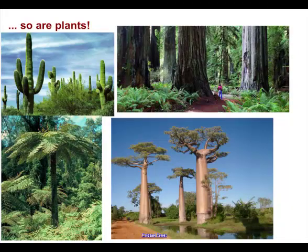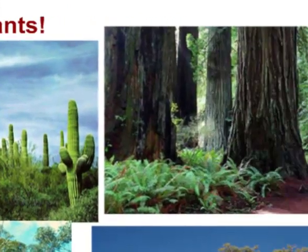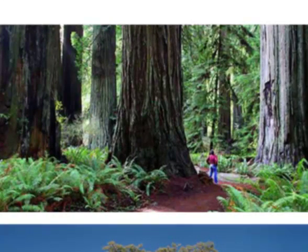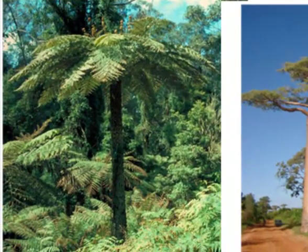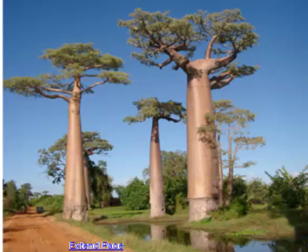Plants are no exception. In a desert we have cacti, specially adapted to store water for long periods of drought. We can also have massive rain forests — here a person walks through the giant redwoods on the coast of California, where lush rainfall promotes lots of growth including ferns. In Australia and New Zealand there are tree ferns — massive great big ferns. In Africa, the baobab tree has a huge trunk to store lots of water for when it gets really dry.